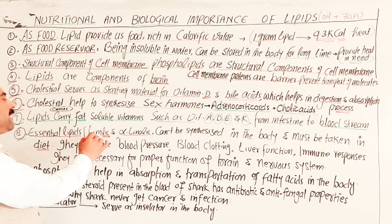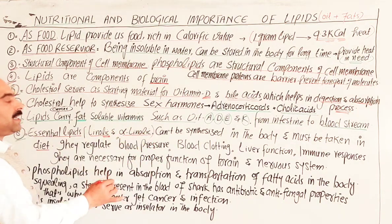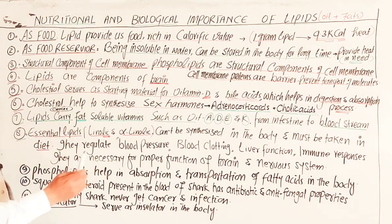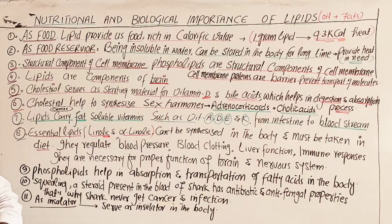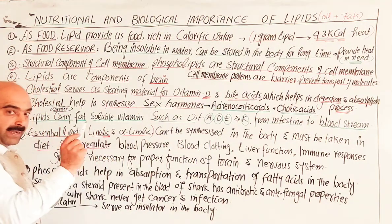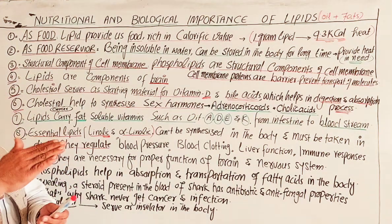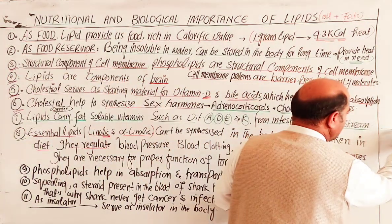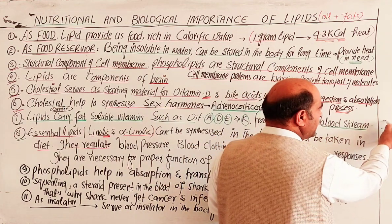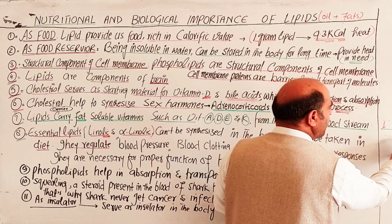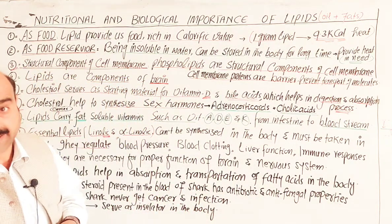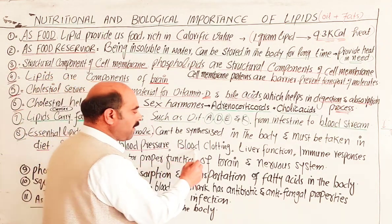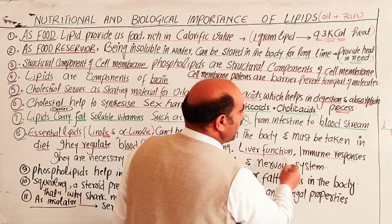Essential fatty acids — such as linoleic fatty acids and alpha-linolenic fatty acids — are essential to the body. The body cannot synthesize them on its own, so they must be obtained from food sources such as fruits, vegetables, and nuts. Essential fatty acids also help regulate various body functions — they regulate blood pressure, blood clotting, liver function, and immune responses, maintaining everything at a normal level.